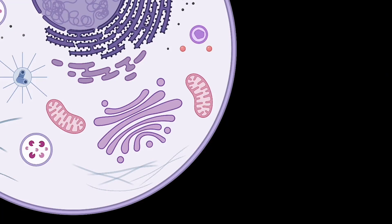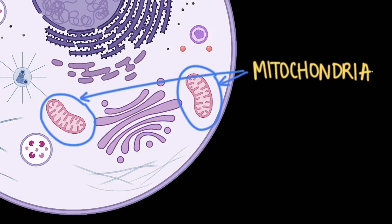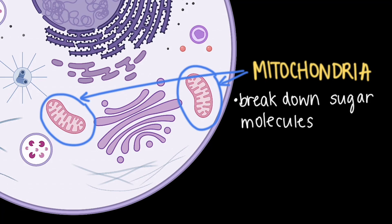For example, these jelly bean shaped organelles here are little energy producing factories called mitochondria. Mitochondria use chemical reactions to break down sugar molecules in order to release energy that the cell can use for other tasks.